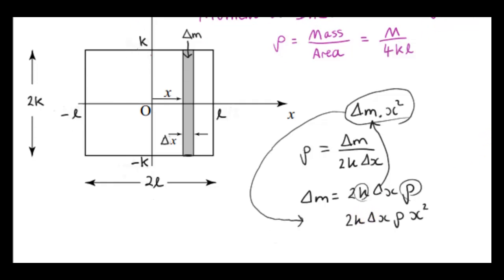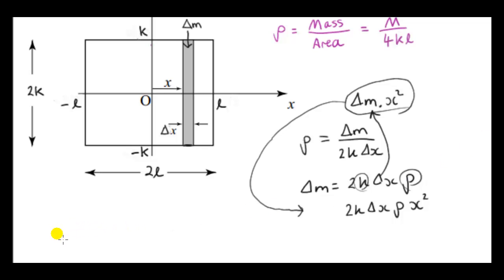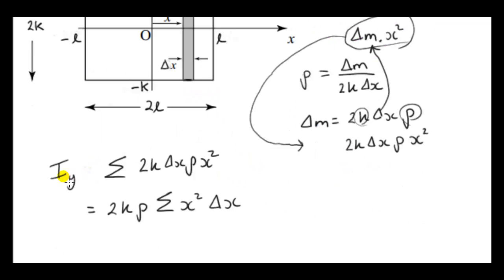And of course, we know what we have to do. To get the moment of inertia about the Y axis, we have to take the sum of all of these. We have to sum over all these strips running from minus L to plus L. Now, more accurately, I should say this is approximately the moment of inertia about the Y axis. We have to take limits to get the exact moment of inertia.